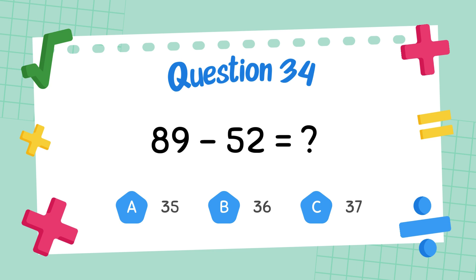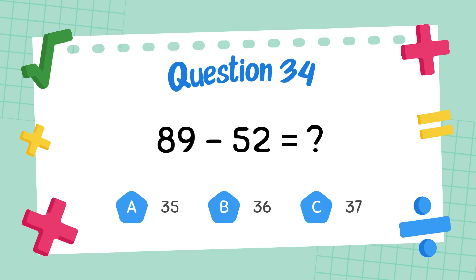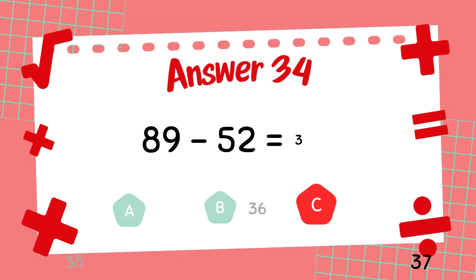What is eighty-nine minus forty-five? The answer is thirty-seven.